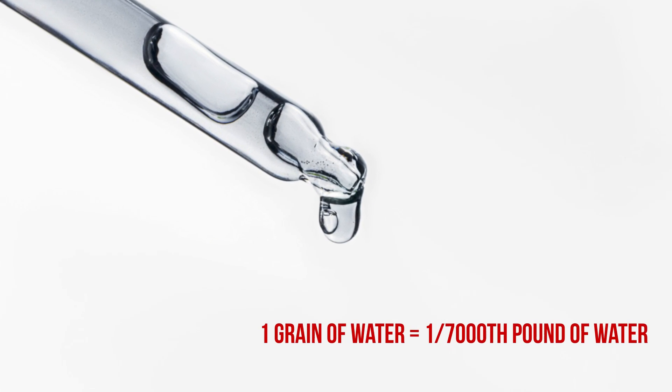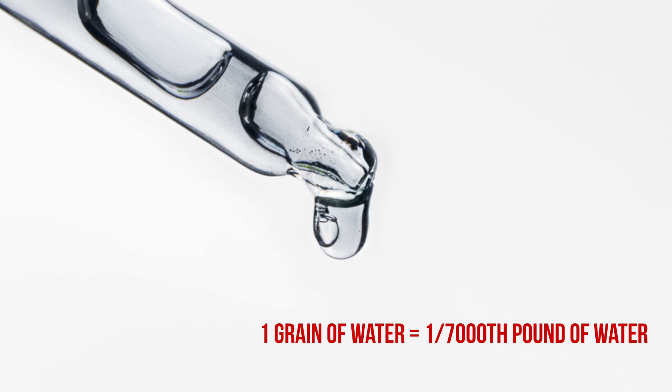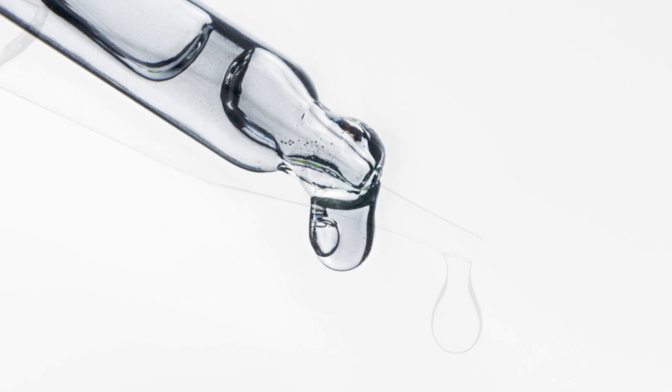Now a grain of water is one seven-thousandth of a pound of water, so this is basically the equivalent of one drop of water out of a pipette. So this isn't exactly a lot of water that we're dealing with.